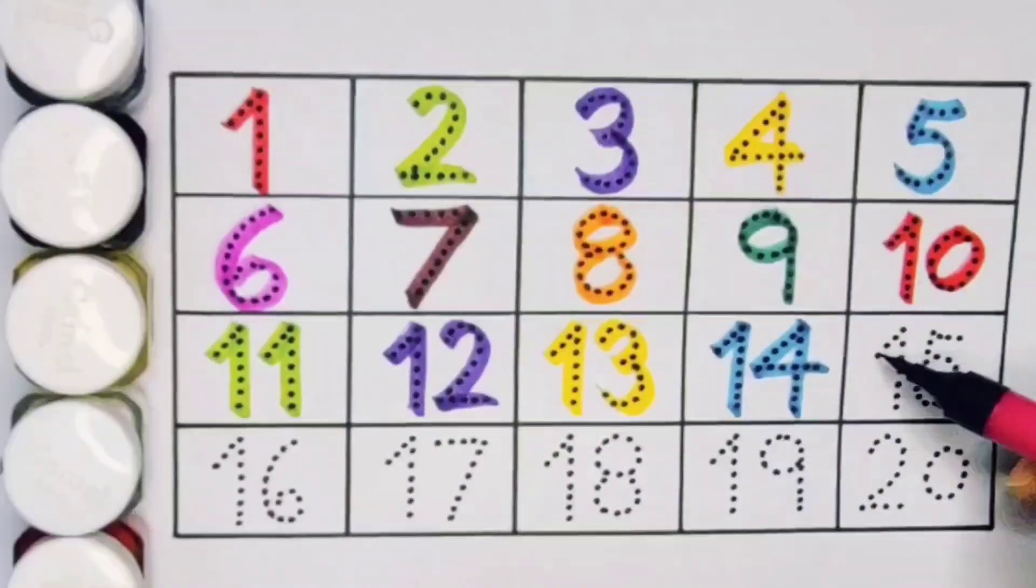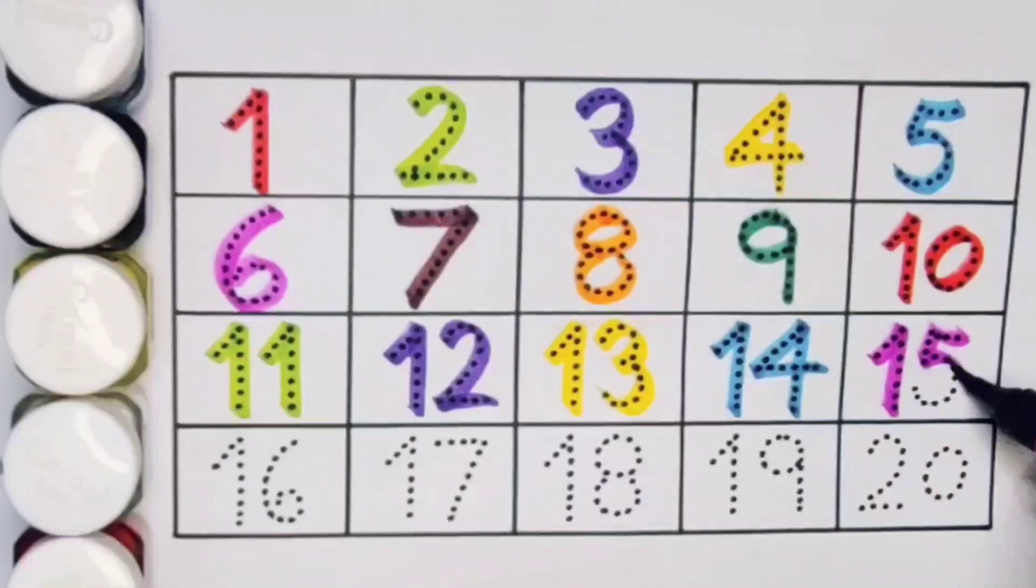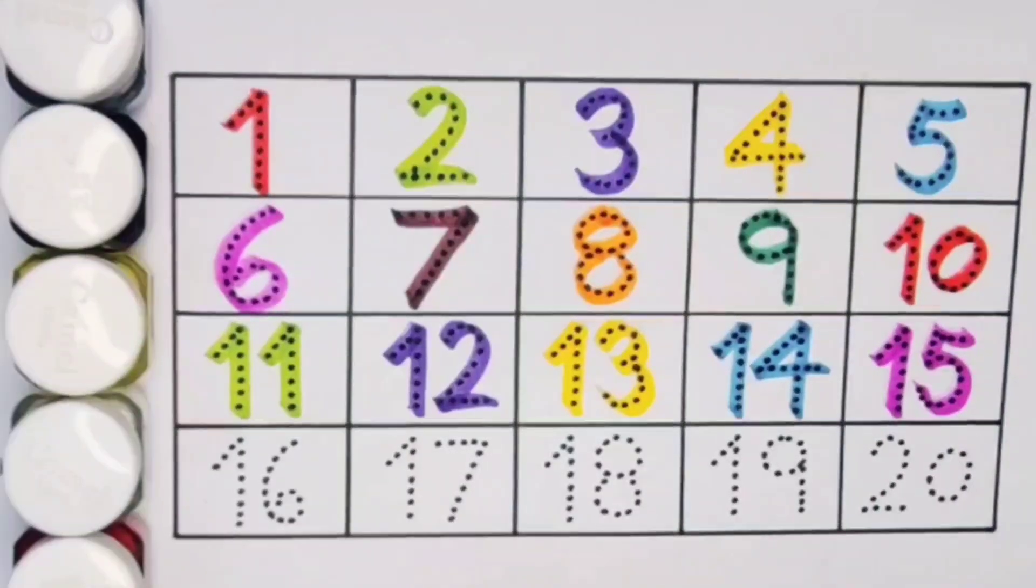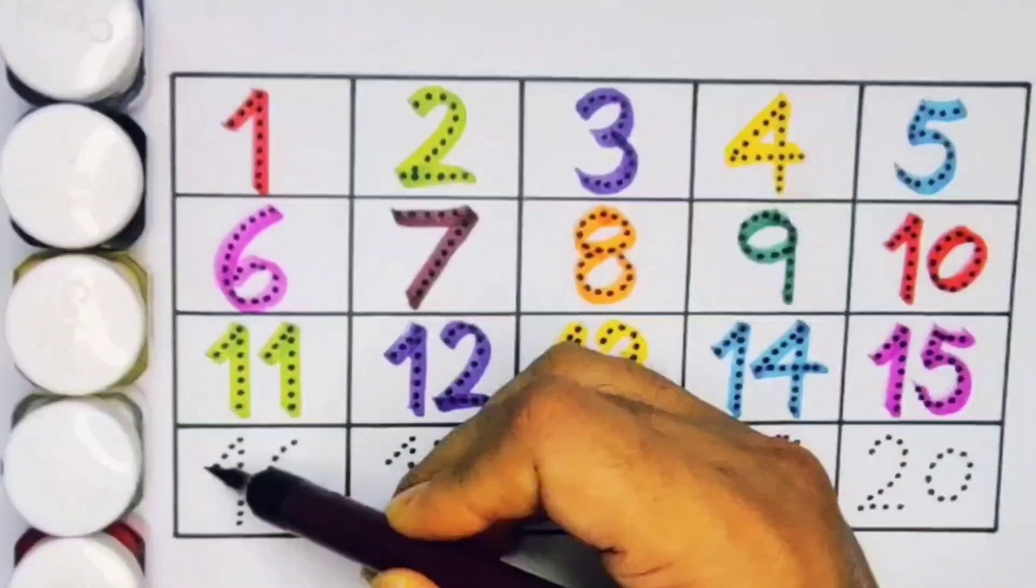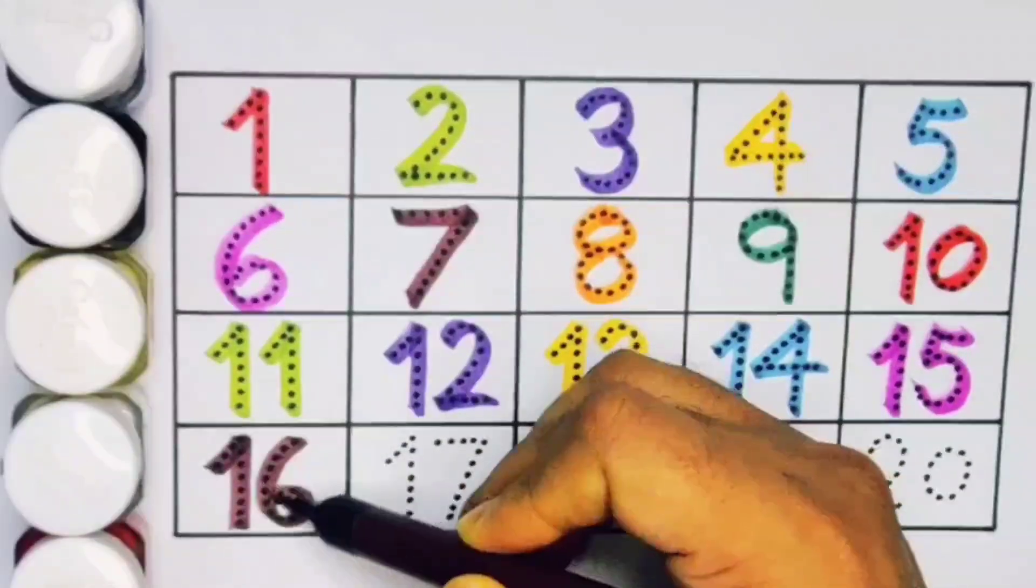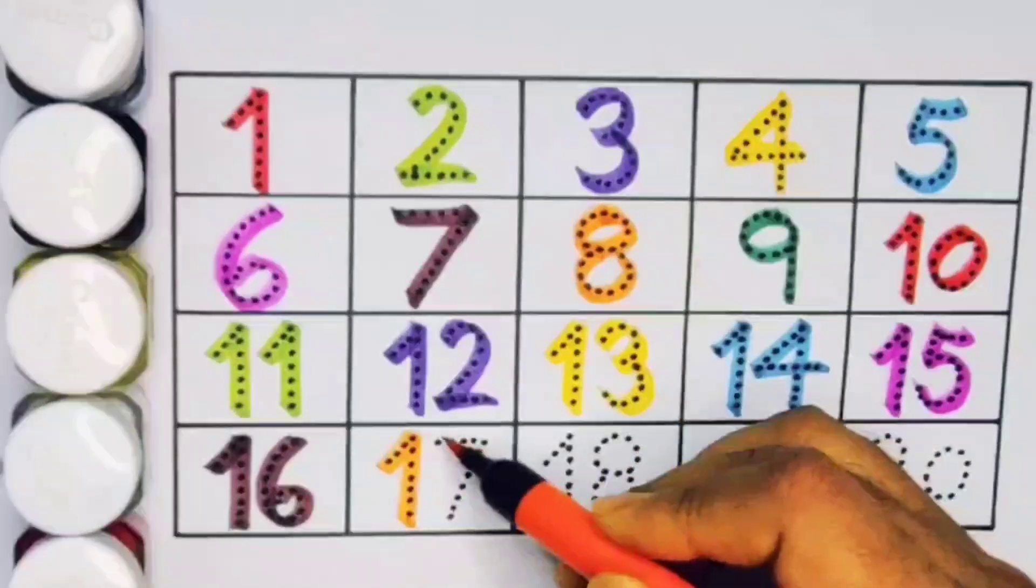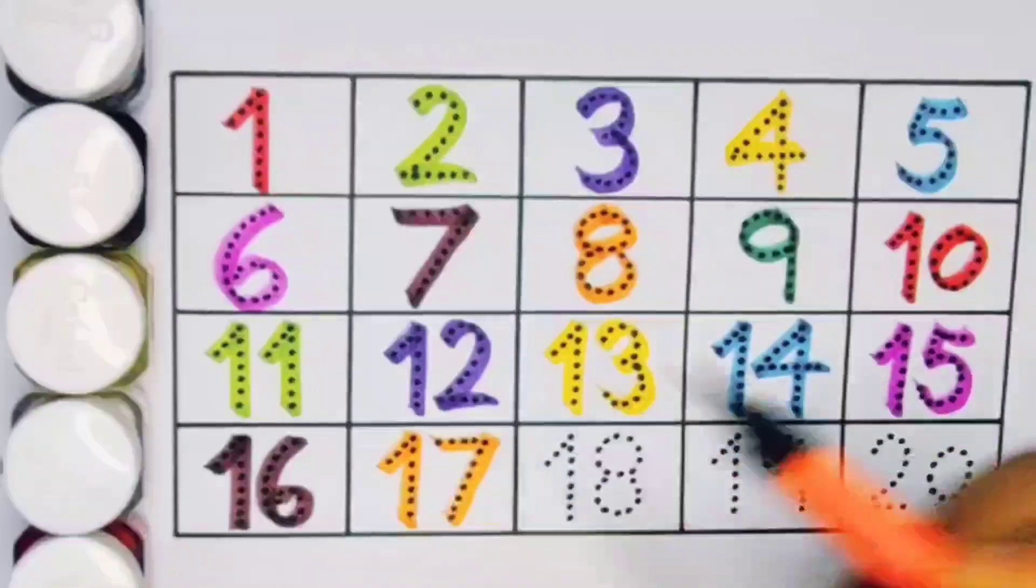Next kids 15, 1, 5, 15. Number 15. Next kids 16, 1, 6, 16. Number 16. Next kids 17, 1, 7, 17. Number 17.